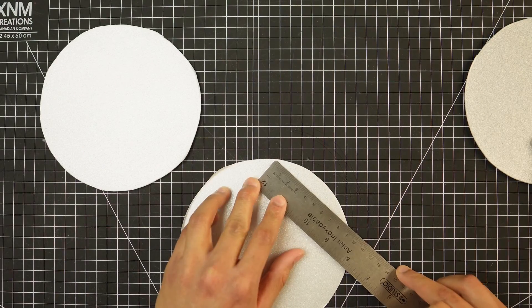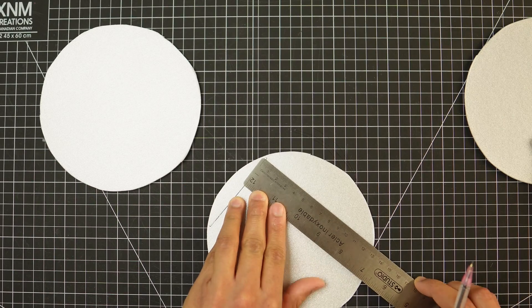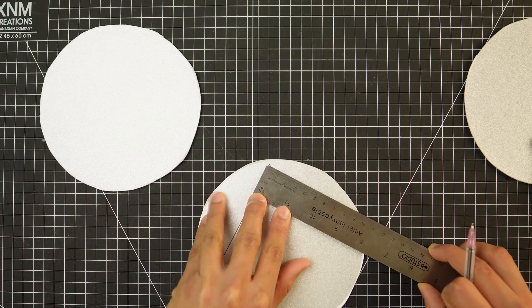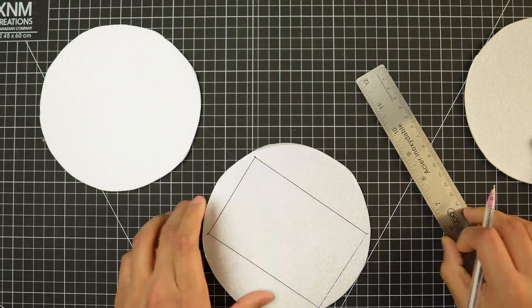Once you have that flat sheet, you want to cut out a rectangle. The measurements will be provided in the description box, so check out the planner.